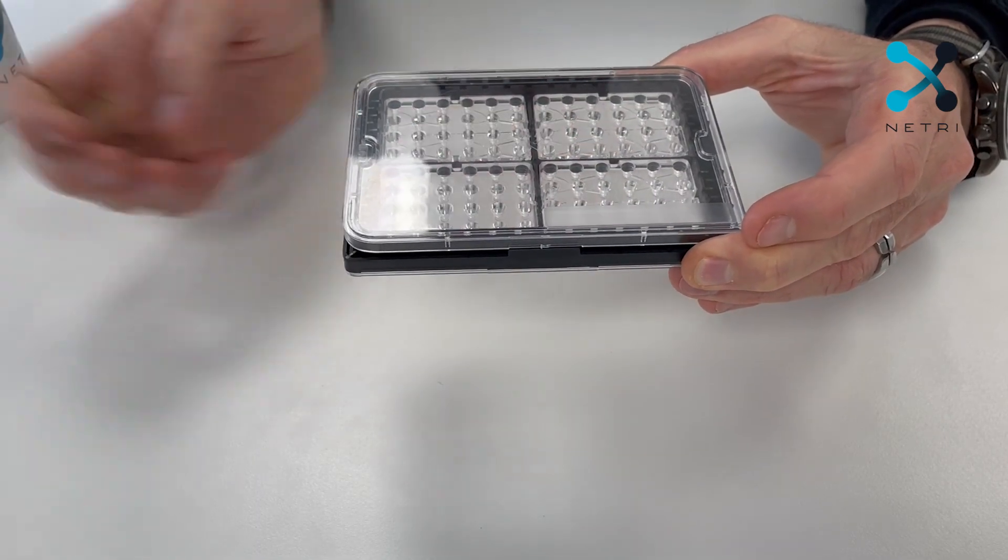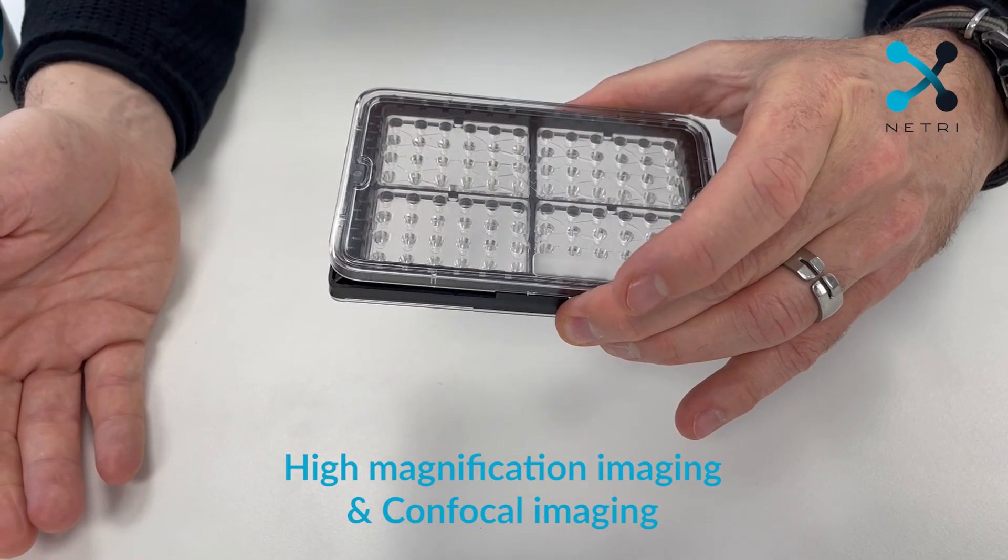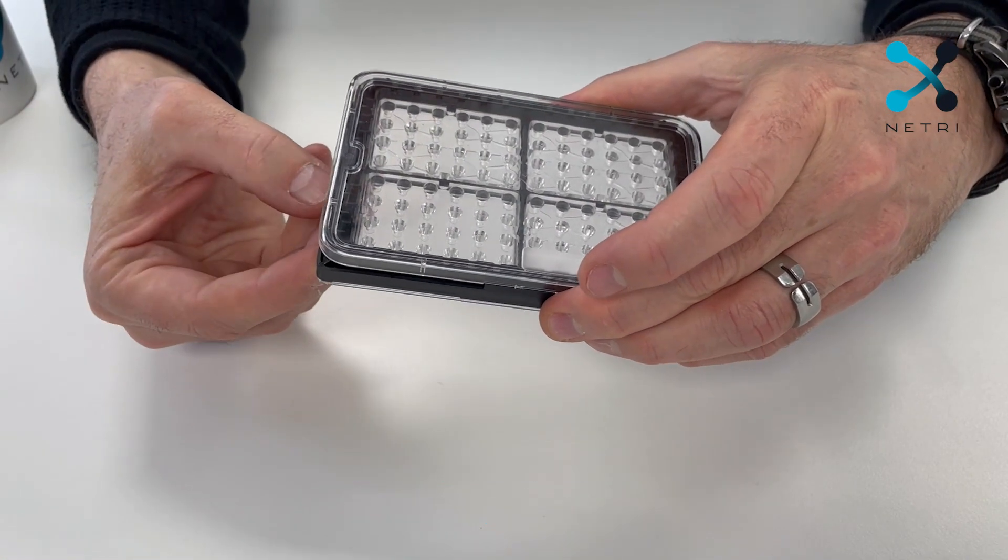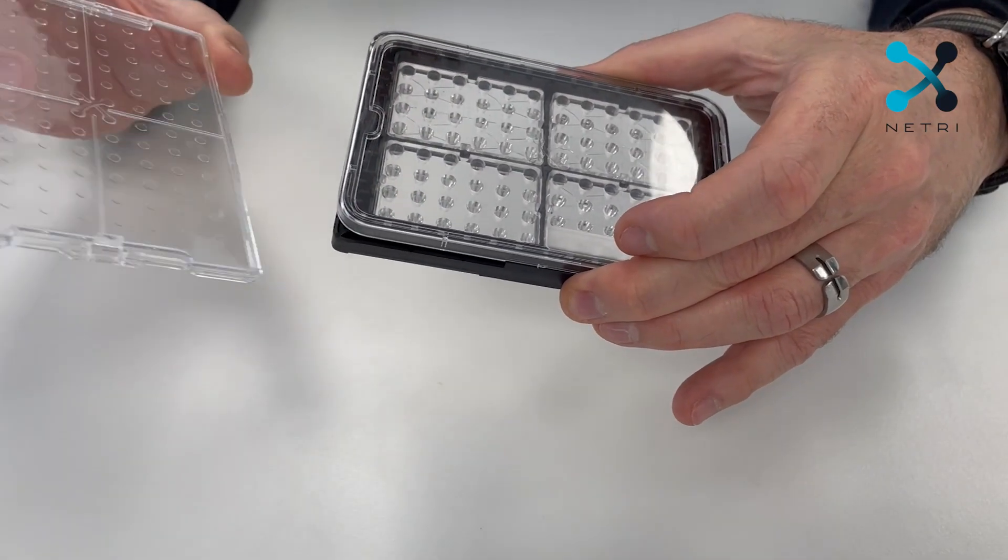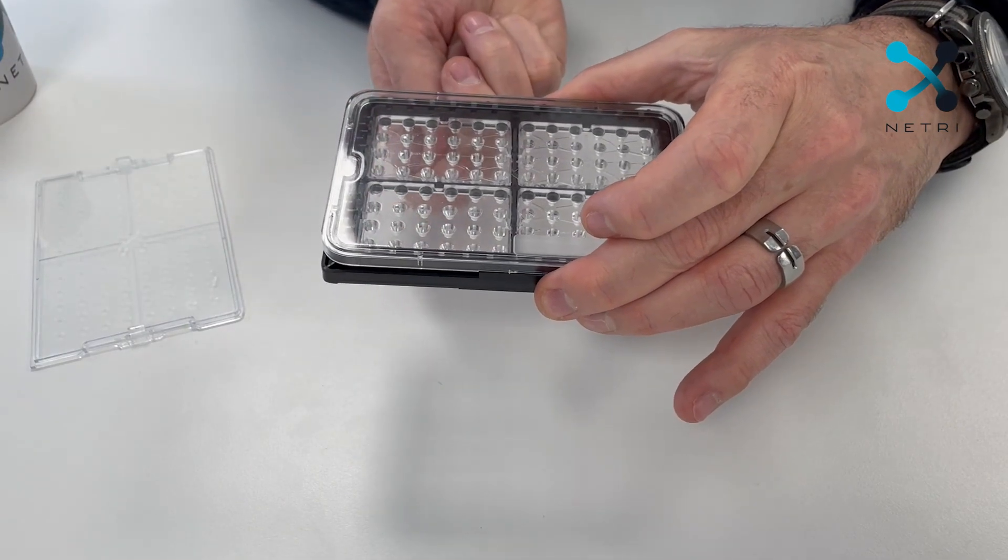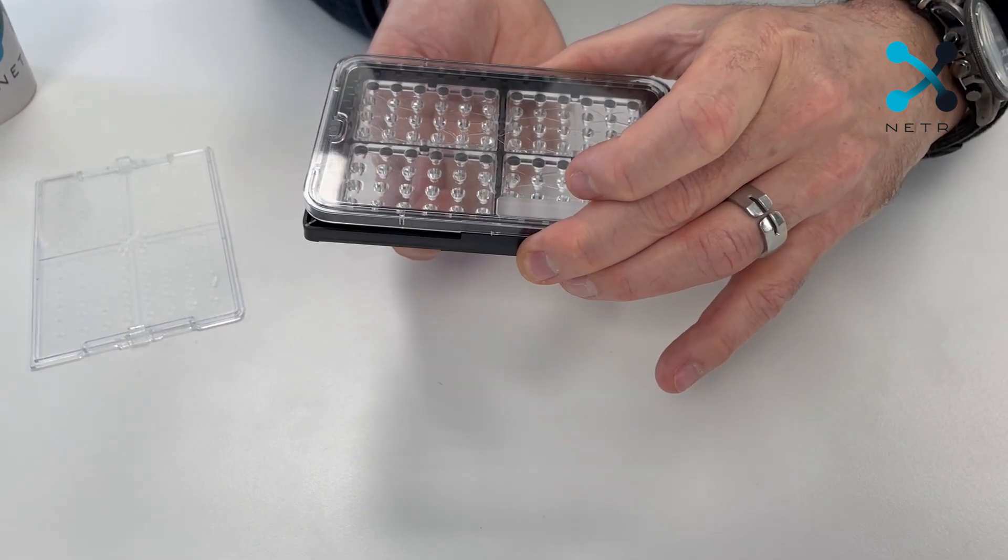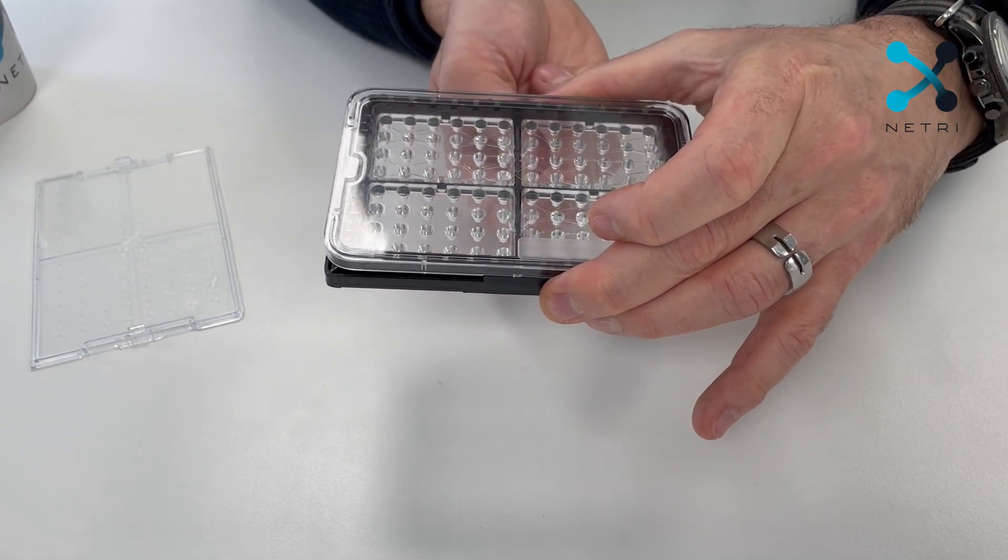Now if you want to do higher magnification or even confocal imaging, here's the little trick. You can remove the bottom cover and this allows you to get right close, about 200 or 170 microns from your area of interest and get those really crystal clear pictures that you need.